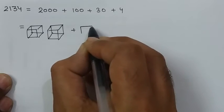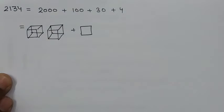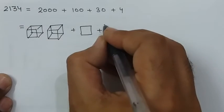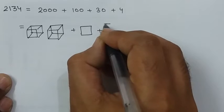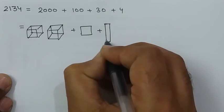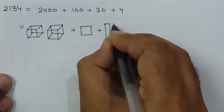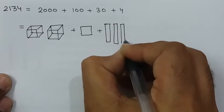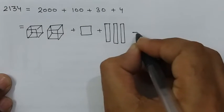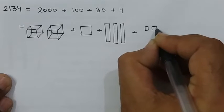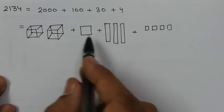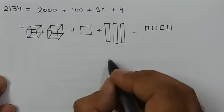100 and 30. How many tens make 30? 3 tens. So 1 ten, 2 tens and 3 tens. And 4 ones. 1, 2, 3 and 4. Clear?